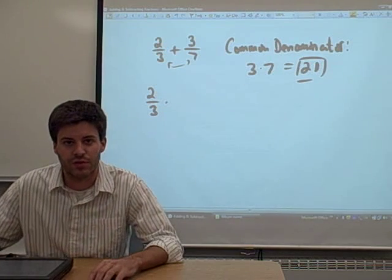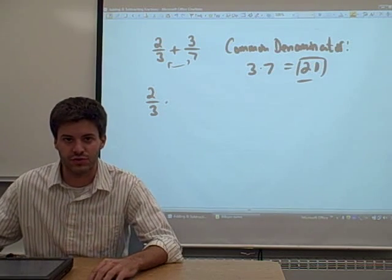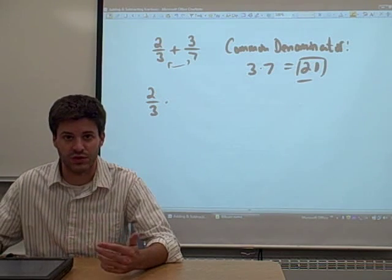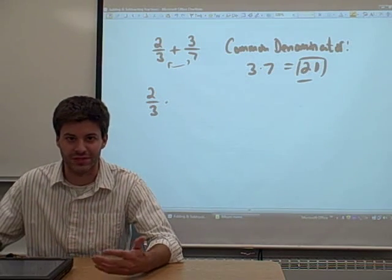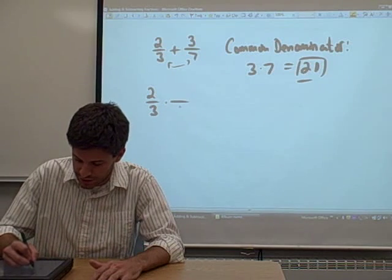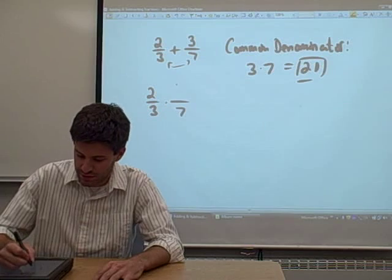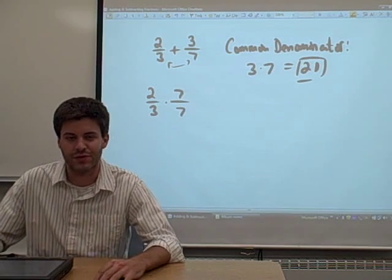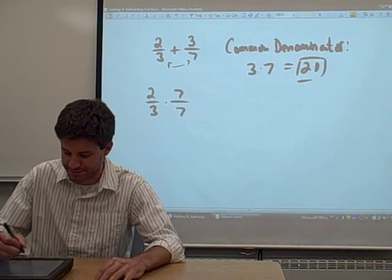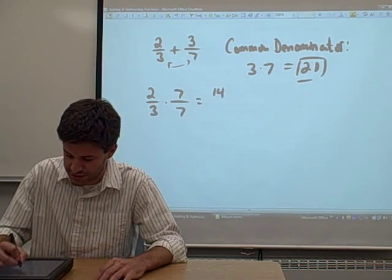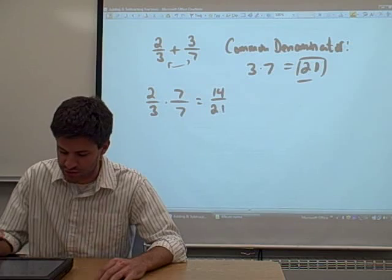So let's look at 2 thirds. We want to convert that 2 thirds into a fraction that has a denominator of 21. The way we found the 21 in the first place is multiplying 3 by 7. So if we want a denominator of 21, we've got to multiply the 3 by 7. To make this a legal operation, we have to also multiply the numerator by 7. So 2 thirds is converted when we multiply across into 14 twenty-firsts.